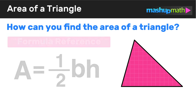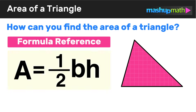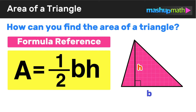To find the area of a triangle, we use a formula. The area of a triangle formula is: A equals one half times the base times the height. As long as you know the value of the base and the height, you can plug those into the formula and figure out how many unit squares make up the area of the triangle. Now let's look at a few examples of how to use the formula.